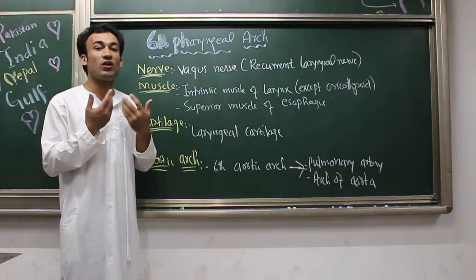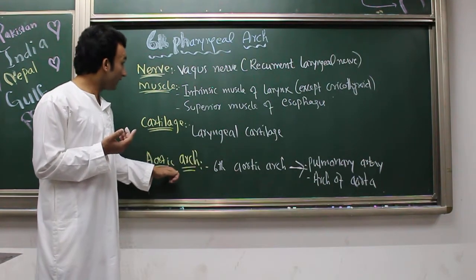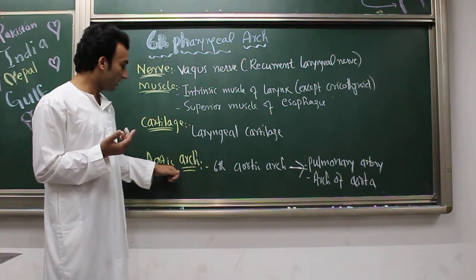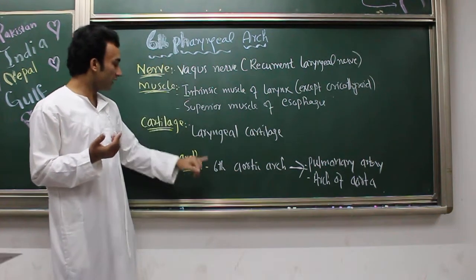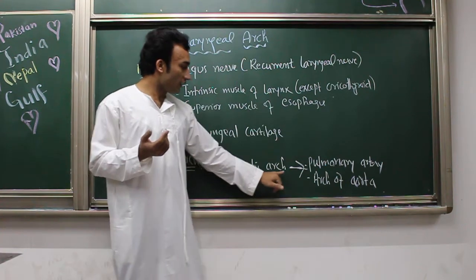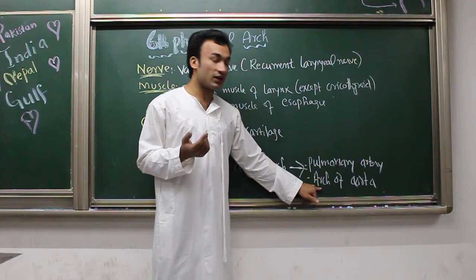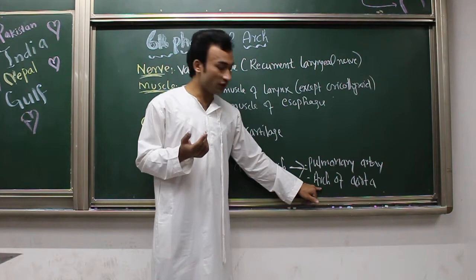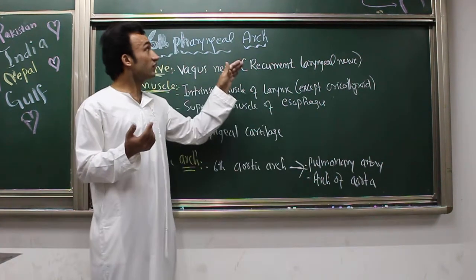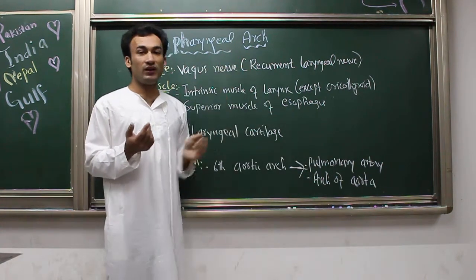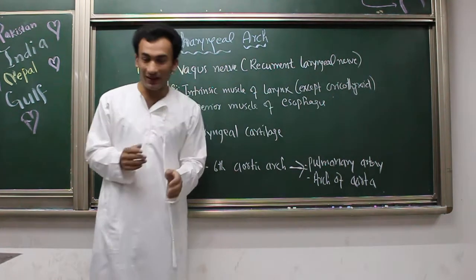The cartilage: as mentioned, both the fourth and sixth pharyngeal arches give rise to the cartilages of the larynx. The aortic arch component of the sixth pharyngeal arch is the sixth aortic arch, which forms the pulmonary artery and part of the arch of the aorta. So remember: sixth pharyngeal arch gives pulmonary artery and part of the aortic arch. Hope you guys understand — study hard, enjoy your time, bye bye.